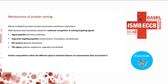Protein sorting is mainly mediated by protein-protein and protein-membrane interactions. The most well-characterized mechanisms are based on the molecular recognition of sorting or targeting signals present along the sequence, which are recognized by the sorting machinery to target the protein toward specific compartments. Here I'm listing a few well-known sorting signals, like signal peptides, which direct the protein toward the secretory pathway, organelle-targeting peptides for intracellular organelles like mitochondria, chloroplasts, and peroxisomes, and GPI anchors and transmembrane regions related to membrane localization.